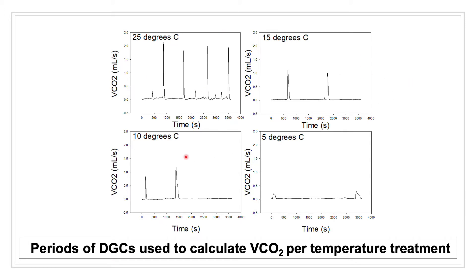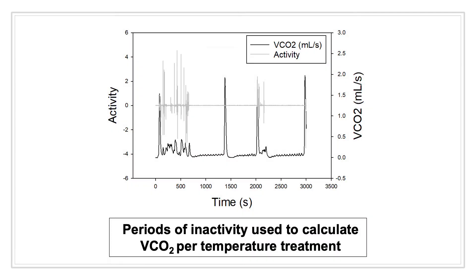These four graphs represent an example of hand-selected patterns of DGCs taken during each experimental treatment. Secondly, VCO2 values extracted from Bombus impatiens individuals exhibiting no signs of activity, as can be observed within this figure where activity equals zero, was used to identify individuals at rest.